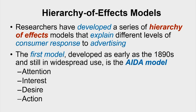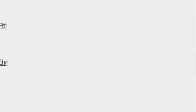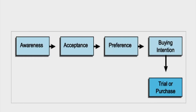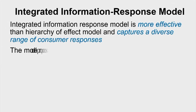We discussed the hierarchy of effects model, which proposes that for marketing communication to be effective it must follow the AIDA steps: an advertisement must arouse interest, capture attention, invoke desire, and lead to action. We then looked at the more complex Steiner model with five stages — awareness, acceptance, preference, buying intention, and trial and purchase — and how these factors affect consumer behavior in the marketplace.